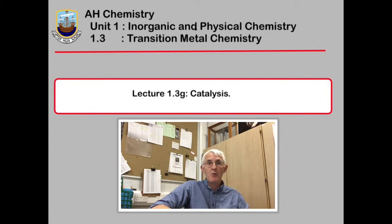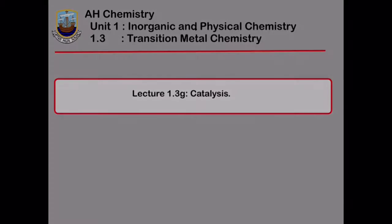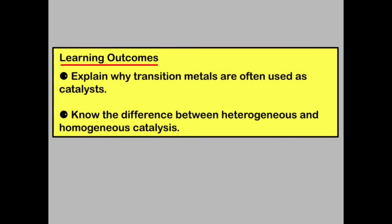In the final part of 1.3, we're going to look at why transition metals are so often used as catalysts. By the end of this lecture, you should be able to explain why transition metals are often used as catalysts, and also you should know the difference between a heterogeneous and a homogeneous catalyst.